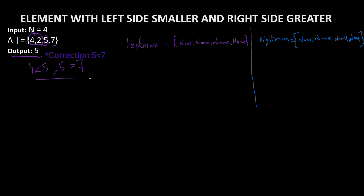Now coming to the coding part - how we approach this. We will divide this into left and right parts. We get the leftmost maximum value compared to the current value, and similarly the rightmost minimum value. This condition will be used after getting the left max values and right min values.